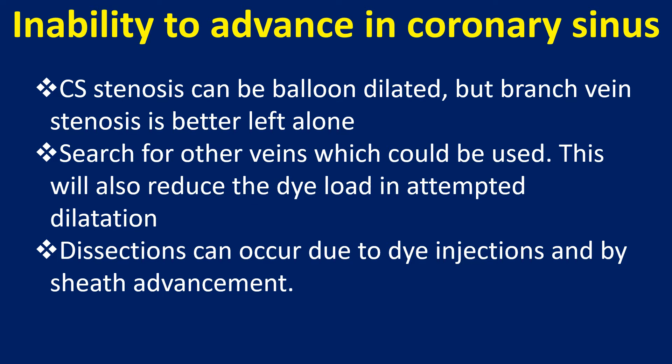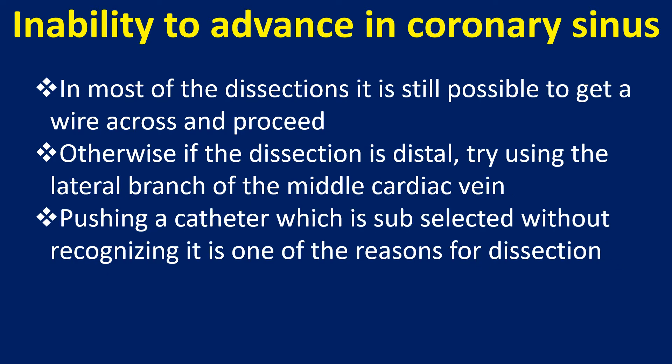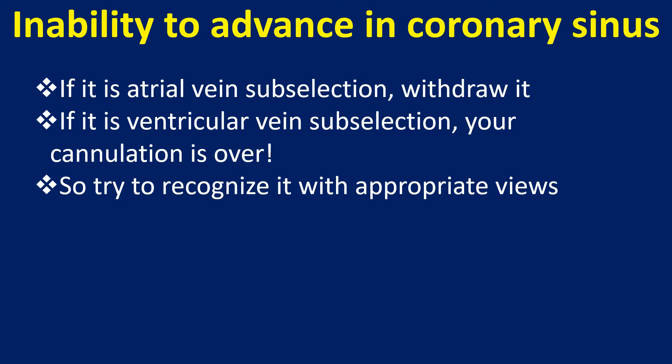Dissection can occur due to dye injections and by sheath advancement. In most dissections, it is still possible to get a wire across and proceed. If the dissection is distal, try using the lateral branch of the middle cardiac vein. Pushing a catheter which is sub-selected without recognizing it is one of the reasons for dissection. If it is atrial vein sub-selection, withdraw it. If it is ventricular vein sub-selection, your cannulation is over — try to recognize it with appropriate views.